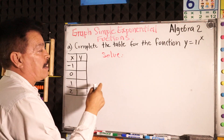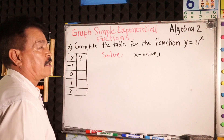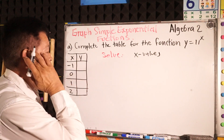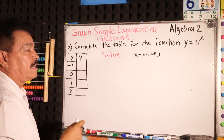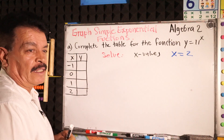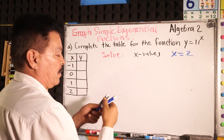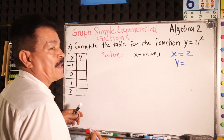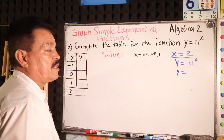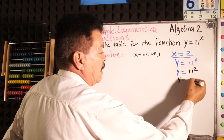Plug in the x values into the function y equals 11 to the x. For instance, if we write x equals 2, we follow the formula here. So we will have y equals 11 to the second power, and then y equals 121.